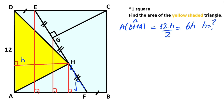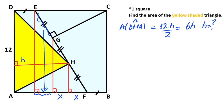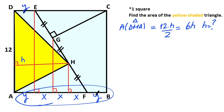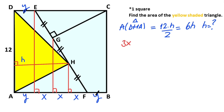Therefore, if there is an x unit on one part, the opposite part must also be x units, and likewise this side is also x units. Then let's call the next length y, so this is also y units, and this length is also y units. Notice that one side of the square is 3x plus 2y, therefore 3x plus 2y must equal 12 units. This is the first equation.